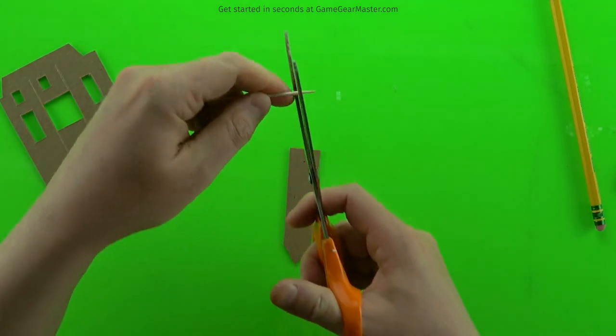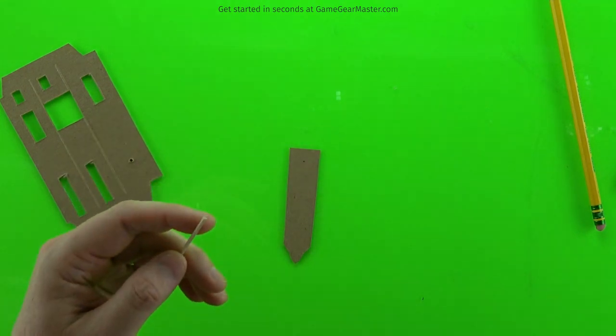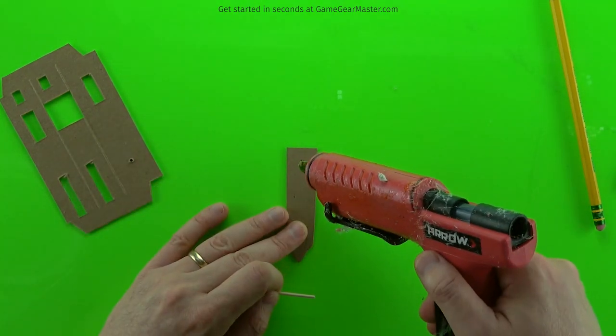And now we need to prep our toothpick. We want to take that sharp edge off because we want to have a flat edge to glue onto the decorator. Then we just hot glue it onto our mark.